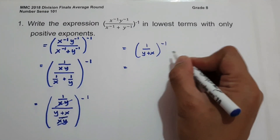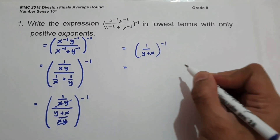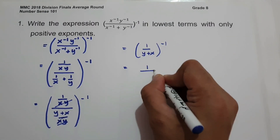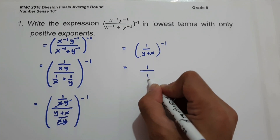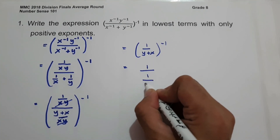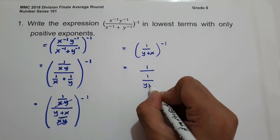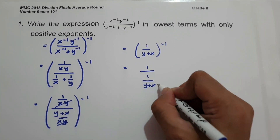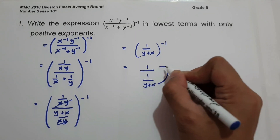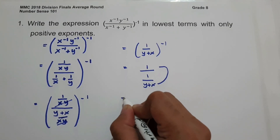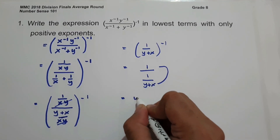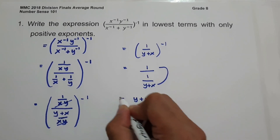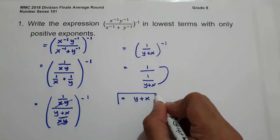So if we find the reciprocal of this, this will be 1 over (1 over y plus x), and multiplying gives us y plus x, and this will be our answer.